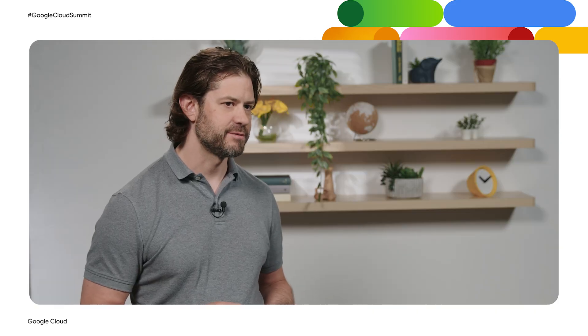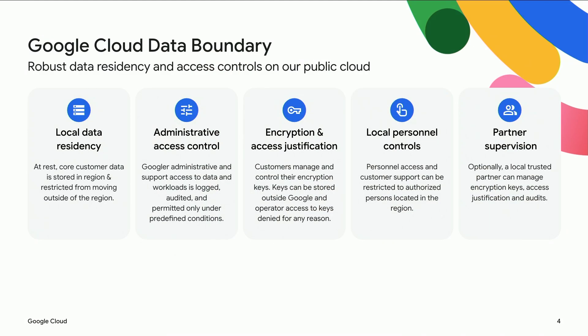Today, we're going to focus primarily on our data boundary solution, which provides a foundation to meet many customer requirements. Google Cloud data boundary customers have access to a large set of Google Cloud products and services, including AI services, with the protection of five key additional control areas. First, data residency controls, which remove global API access and regionalize data residency at rest, in process, and in transit operations. Second, administrative access control, where data access paths are mapped and access controls are put in place to restrict access based on the customer's selected compliance or sovereignty requirements. Administrative access to customer data and workloads is logged, audited, and permitted only under predefined support conditions.